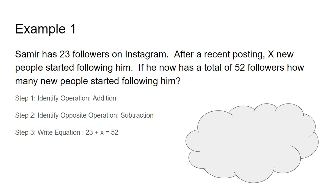To write the equation, we know that our equation is going to have addition in it. So we have 23 + x, because we have 23 followers to start, and then I'm adding x new followers, and now I have a total of 52. Now, in order to solve the problem, we're going to be subtracting. We're going to subtract 23 from both sides, and then we're left with 29.